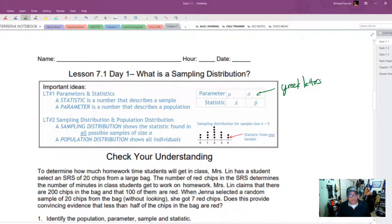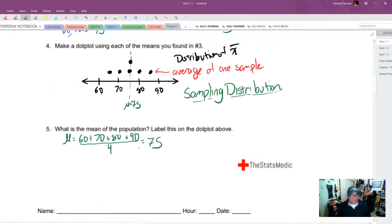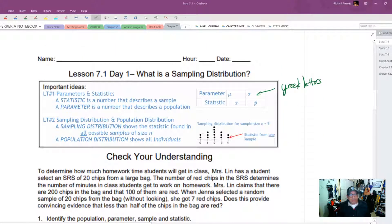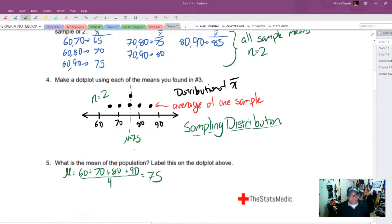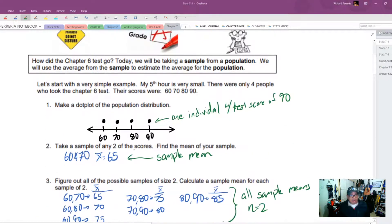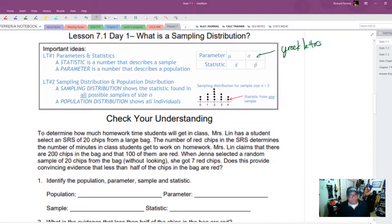Now the next part is a sampling distribution versus a population distribution. So the sampling distribution shows a statistic found in all possible samples of size n, which is what we did here. This is all the possible samples with sampling size n equals 2. The population distribution shows all individuals. So this right here, this was a population distribution. It just shows all the individuals.